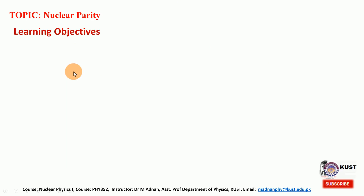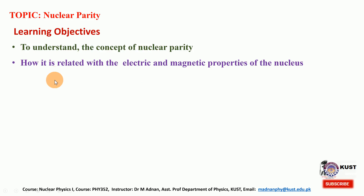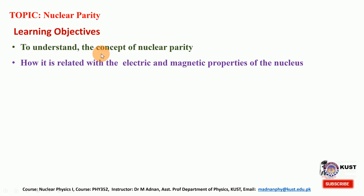First I will give the learning objectives. At the end of this lecture the student will understand the concept of nuclear parity, and they will also know how the nuclear parity is related with the electric and magnetic properties of the nucleus. In the last two lectures we have discussed the electric quadrupole moment and the magnetic moment of the nuclei, and this parity can be used to label various energy states inside the nucleus.